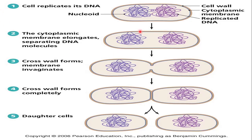The binary fission process is as follows: the cell wall, cytoplasmic membrane, and DNA are present. After replication, the cell divides into two — the cytoplasmic membrane elongates, the size increases, and the DNA separates. Cross wall formation takes place and the membrane invaginates. The cross wall forms completely, then complete division into two daughter cells takes place. So it is binary fission — fission means division and binary means two.